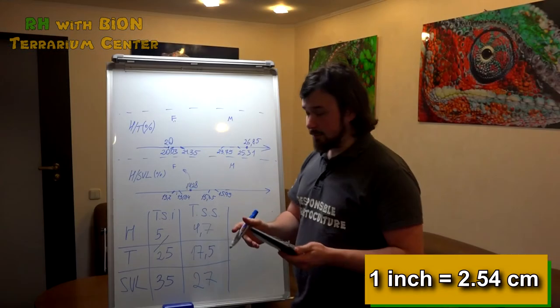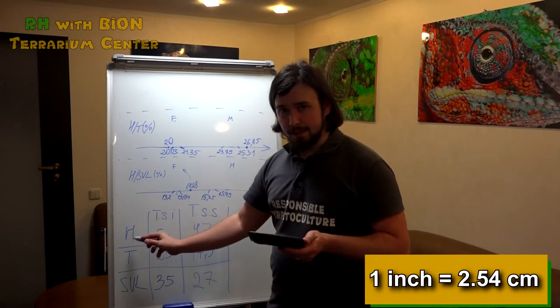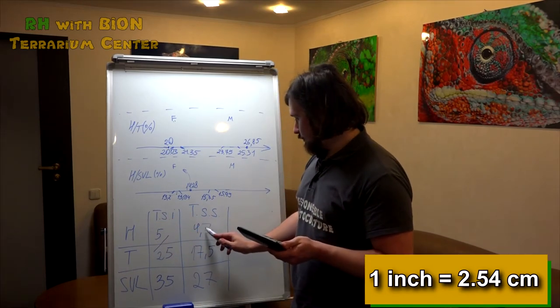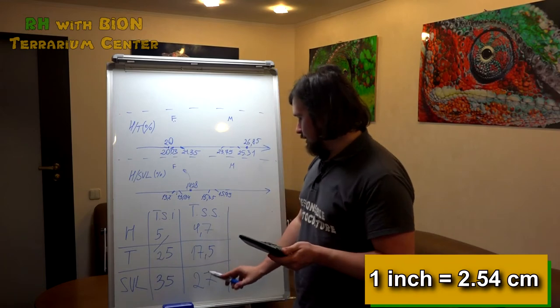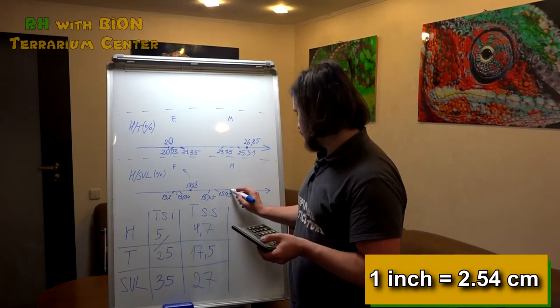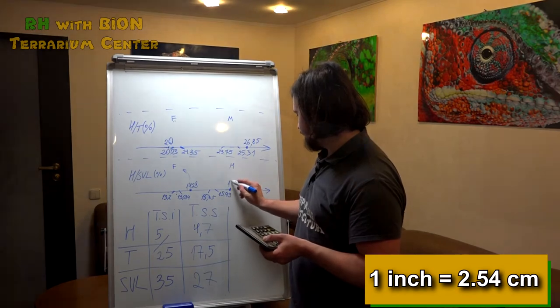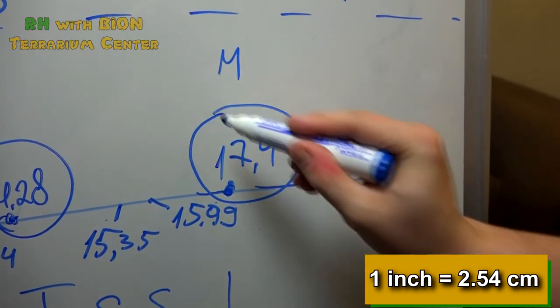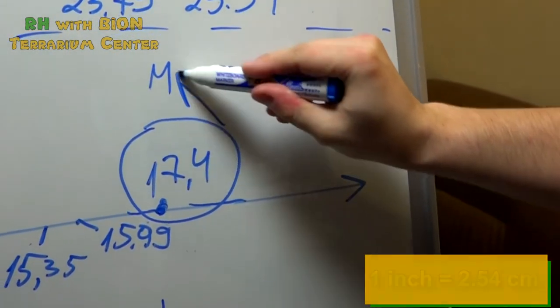Another measurement: we divide head width, 4.7, by snout vent length, 27, gives us 17.4, which goes way here. So in both cases it is a male.